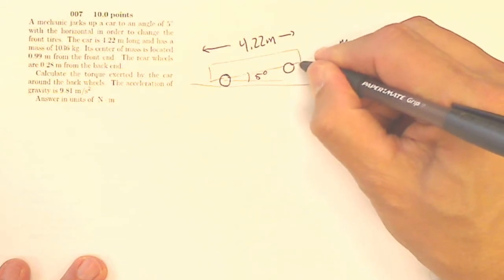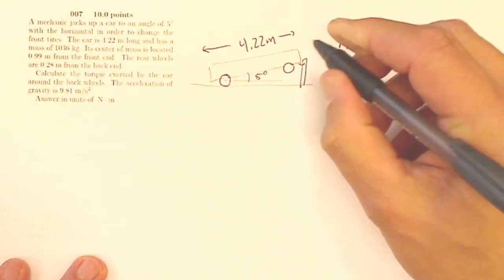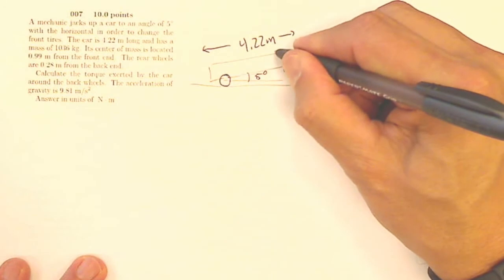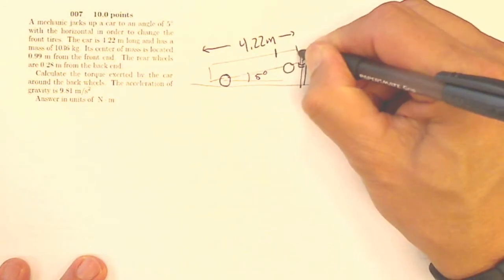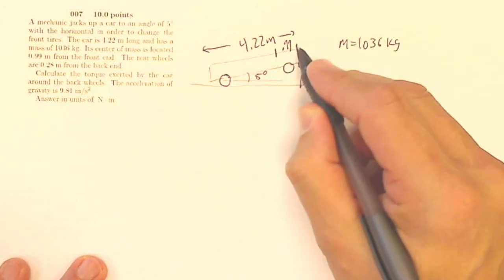So actually it's not just floating in the air but I've got to have my jack sitting here somehow holding up the car. So there's my jack. So the center of mass of the car is located 0.99 meters right here away from the front of the car.